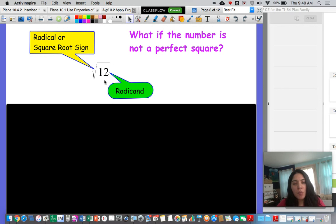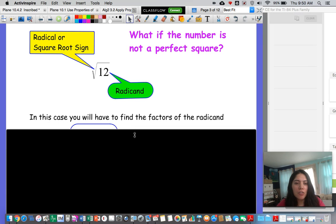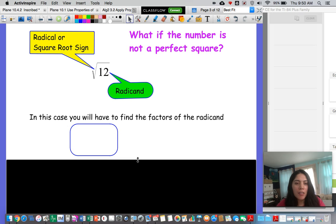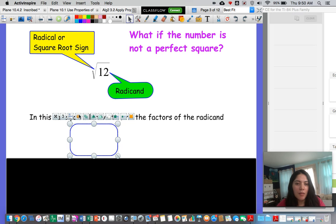So what happens when the number is not a perfect square? Well in that case you will need to find your factors. So think of the factors of 12. Okay, so our factors of 12 are 1 times 12, 2 times 6, and 3 times 4. 1 and 12, 2 and 6, those are not perfect squares but we do know that 4 is a perfect square.